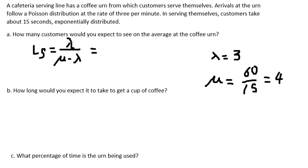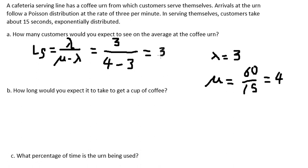So we put lambda equals 3 in the formula: 3 divided by (4 minus 3), which gives us 3. This is the average number of customers in the coffee shop.